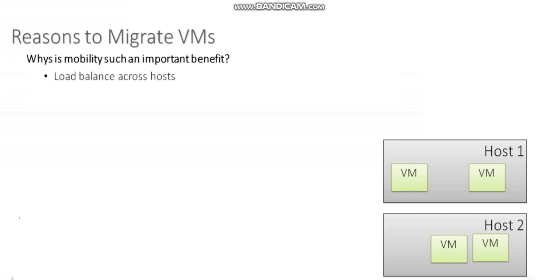If host one is running really low on memory, maybe we move some VMs to another host — and ideally, we'd do that without any downtime. We can do a live migration or vMotion to take a running VM and move it from one physical server to another with no downtime. That's one reason we might want to migrate VMs.